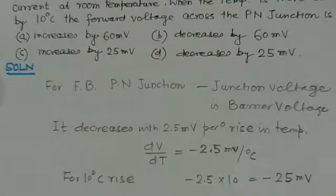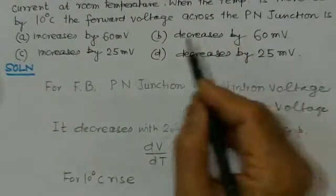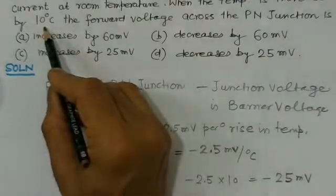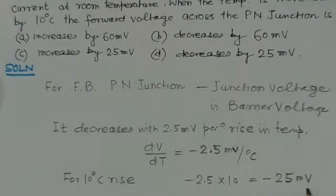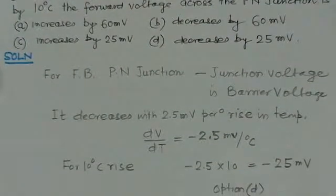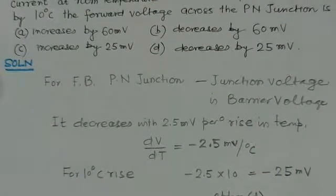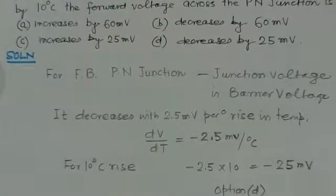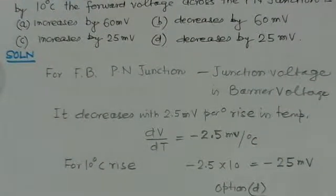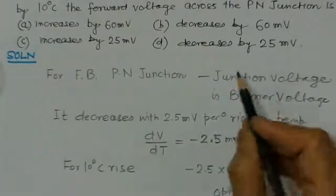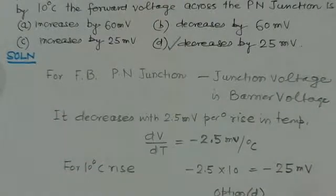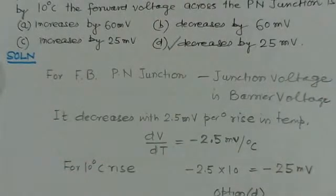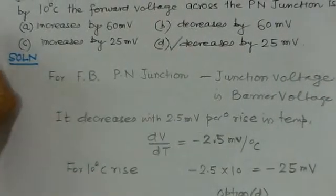For this problem, there is a temperature change of 10 degrees. So for a 10-degree rise, the change in voltage is -2.5 × 10 = -25 millivolts. Since this is negative, it represents a decrease in voltage — a decrease of 25 millivolts. Therefore, option D is the correct choice for this problem.